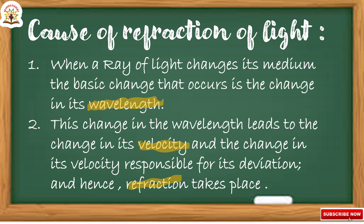During refraction, whenever a light ray travels from one medium to another, its wavelength changes and its velocity also changes. Due to the change in wavelength and velocity, the light ray changes its direction — hence refraction, or bending, takes place. These are the causes of refraction.